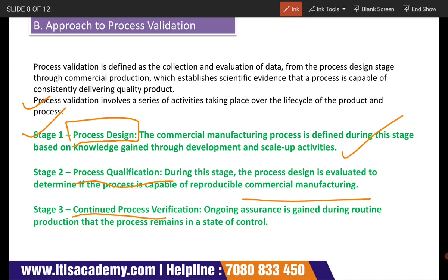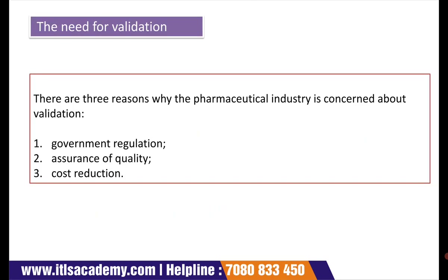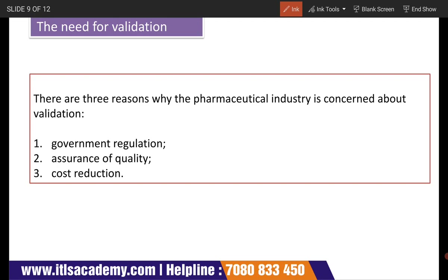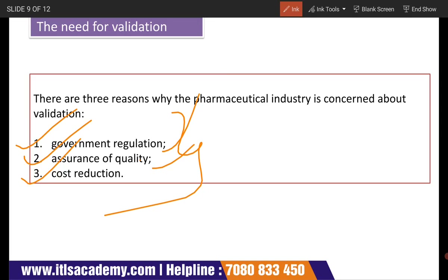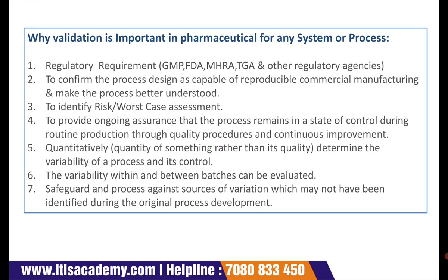Now, what is the need for validation? There are three main needs: first is government regulation, second is assurance of quality, and third is cost reduction. Government regulations involve guidelines and quality checks to confirm that a particular medicine or drug is safe for human consumption.